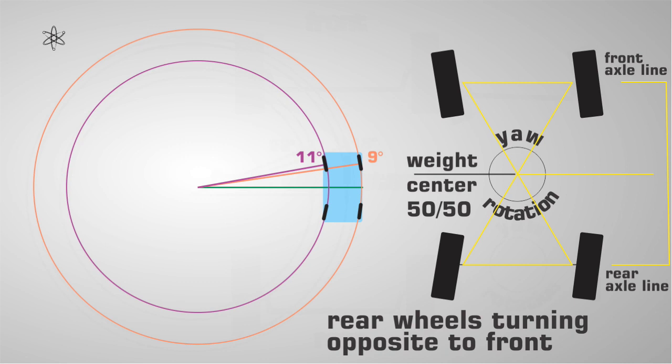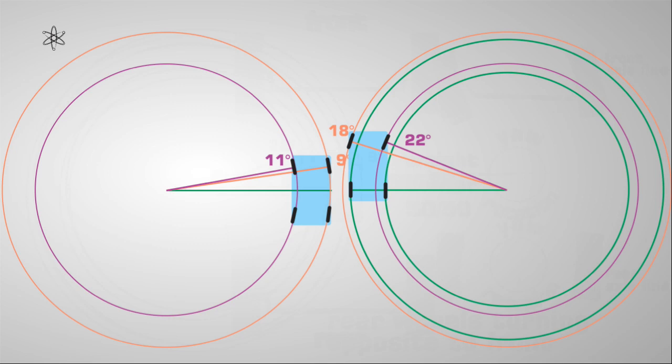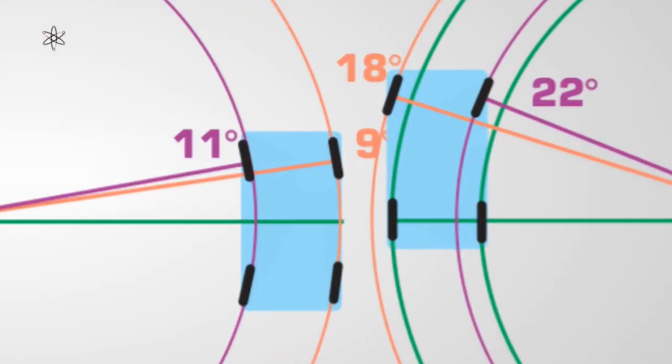This would probably eliminate any form of having too much understeer. Notice now how little work the front steering has to do when compared to the front two wheel steering. What was an 18 degree steering angle on the outer wheel is now half to nine degrees even though radius has not changed.